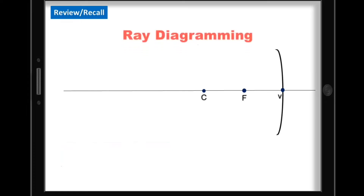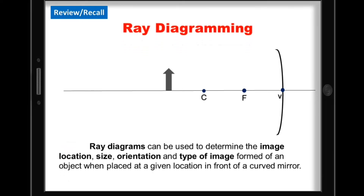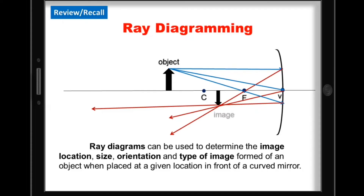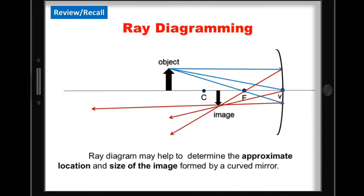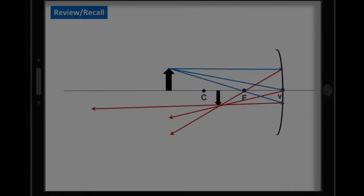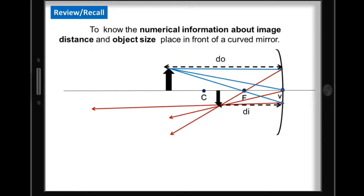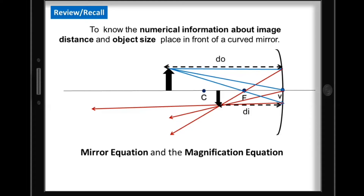You have learned from our previous lesson that ray diagrams can be used to determine the image location, size, orientation, and type of image formed by objects when placed at a given location in front of a curved mirror. Remember that ray diagramming may help you determine the approximate location and size of the image formed by a curved mirror.